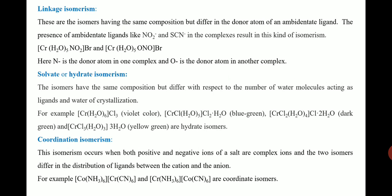Some ambidentate ligands include nitrite and thiocyanate. In the examples for linkage isomerism, in the first complex nitrogen acts as the donor atom, but in the second complex oxygen acts as the donor atom. Linkage isomerism is due to the presence of ambidentate ligands.